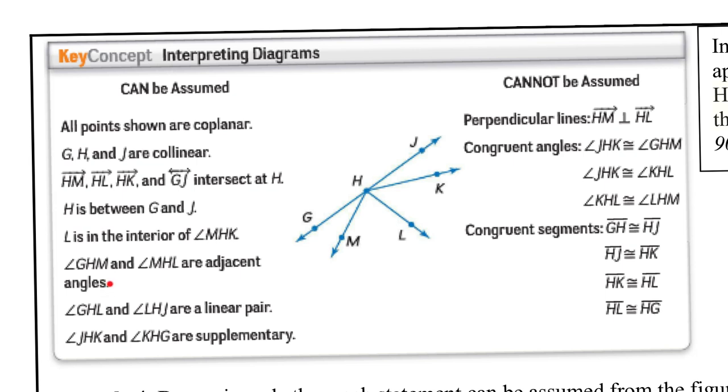You can assume that these are adjacent angles, GHM and MHL. Yes, you can assume they're adjacent. Since this is a straight line, you can assume that GHL and LHJ are a linear pair. Okay. And because they're a linear pair, that means they're supplementary.